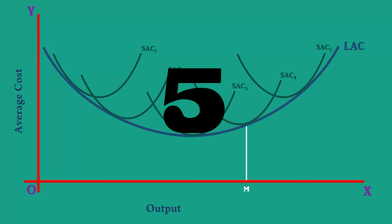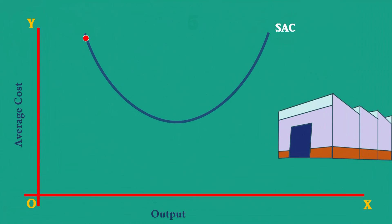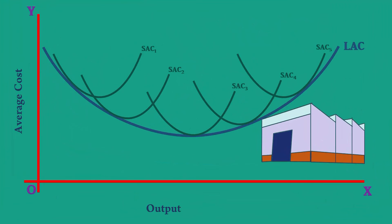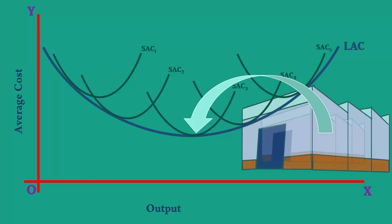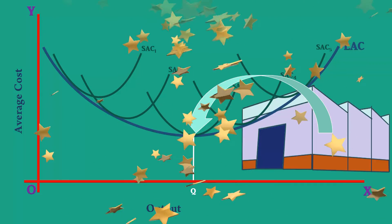Fifth, when a firm operates at the minimum point of the plant curve, it utilizes its full capacity. When a firm operates at the minimum point of the long run average cost curve, the firm becomes optimum. It utilizes the full capacity of the plant. The output is optimum because it is produced at the least cost.